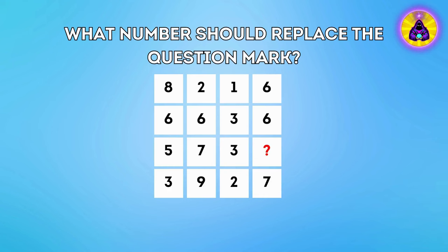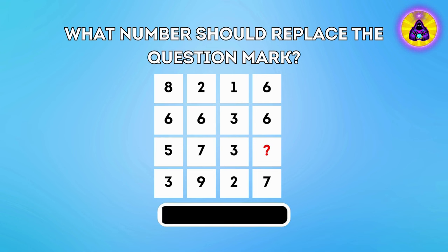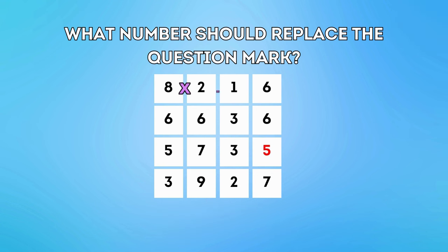Question 23. What number should replace the question mark? Multiply first two numbers and result are the other two numbers. So five times seven is thirty-five.